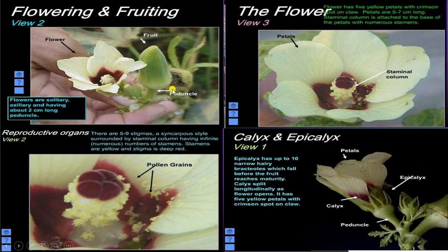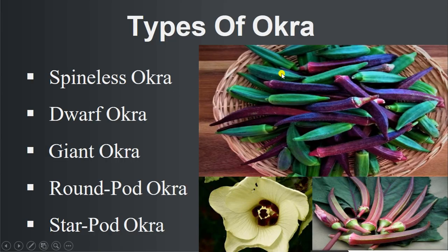Flowering and fruiting of okra crop: first is calyx and epicalyx formation; second view shows flowers, fruits, peduncles, and pollen grains; third view shows petals and staminal column. Types of okra include: spineless okra, dwarf okra, giant okra, round pod okra, and star pod okra.